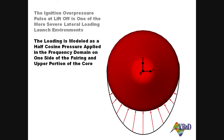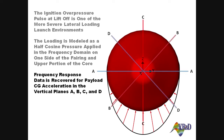The ignition overpressure pulse applies lateral pressure loads to one side of the launch vehicle. Lateral loading tends to excite the payload and the fairing because both are cantilevered from the top of the launch vehicle. Data is recovered in four vertical planes clocked at 45 degrees around the launch vehicle.